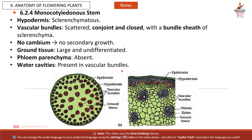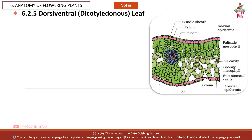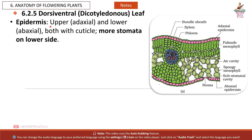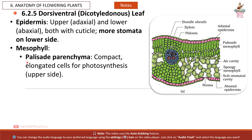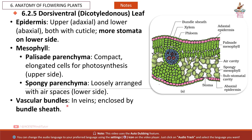A water cavity is present in the vascular bundles of the monocot stem. The Dorsiventral (Dicotyledonous) Leaf has an upper adaxial and lower abaxial epidermis, both with cuticle, and most stomata on the lower side. The mesophyll includes palisade parenchyma — compact elongated cells for photosynthesis on the upper side — and spongy parenchyma, loosely arranged with air spaces on the lower side. Vascular bundles are found in the veins, enclosed by a bundle sheath.